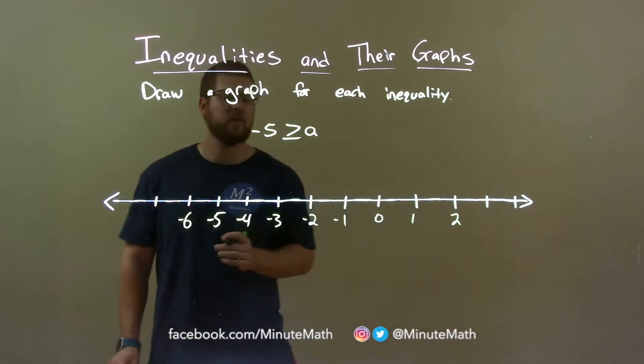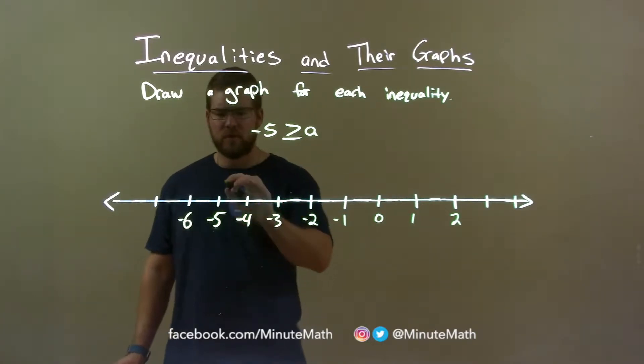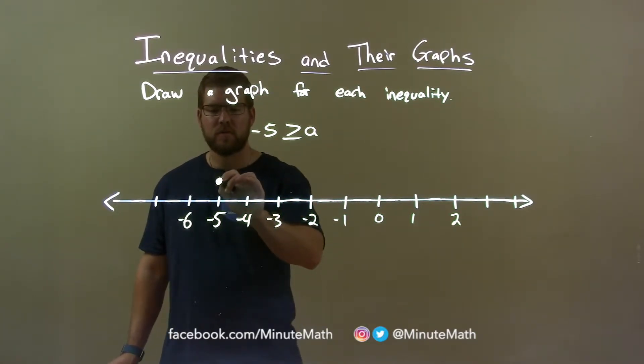Now they tell us negative 5 is equal to our a value, so it's equal to, we have a closed circle there.